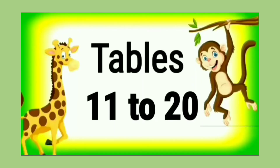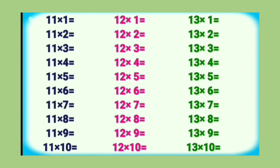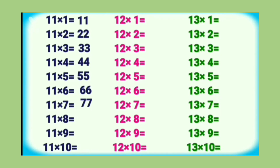Tables from 11 to 20. Table of 11: 11 1's are 11, 11 2's are 22, 11 3's are 33, 11 4's are 44, 11 5's are 55, 11 6's are 66, 11 7's are 77, 11 8's are 88.